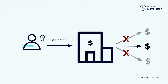When I authenticate to an ATM using my card number and PIN — roughly speaking, the equivalent of a username and password — I don't then get unfettered access to all of the bank's accounts. Rather, I'm permitted only to access and manage the funds belonging to me. Authentication in Kafka is the same.